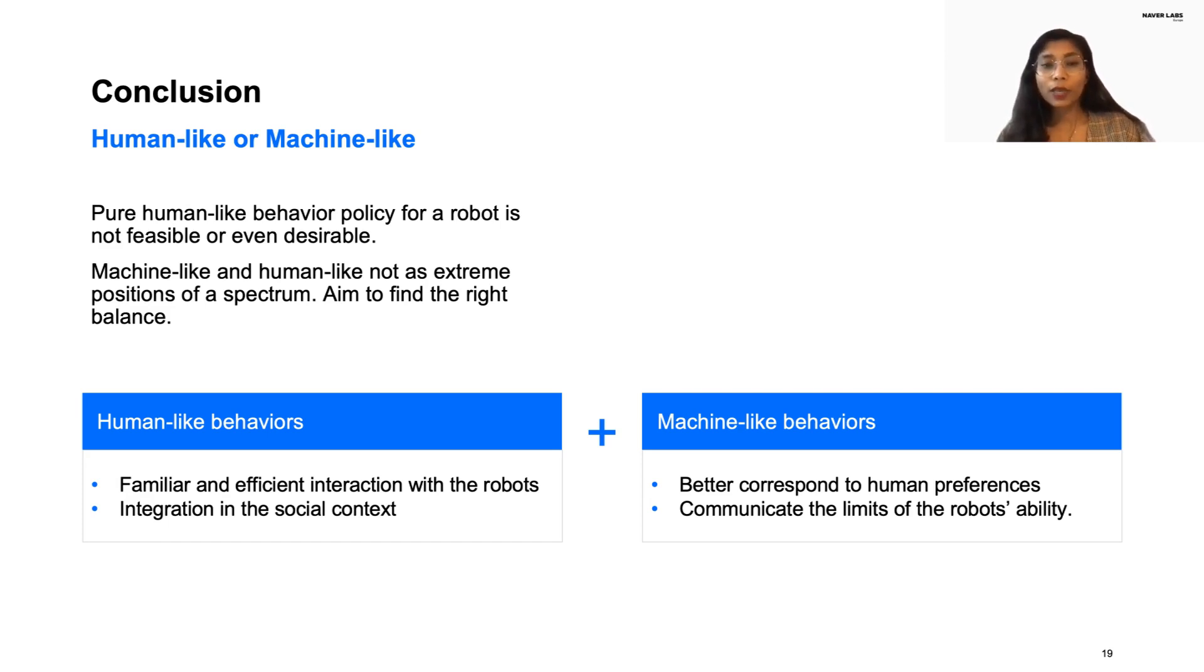We rather advocate finding the right balance when designing policies that leverage human-like behaviors to have a familiar and efficient interaction with robots and ensure that the robots blend into the social context, and machine-like behaviors that better correspond to human preferences and transparently communicate the limits of the robot's ability to handle only certain social interactions based on the technical limitations.